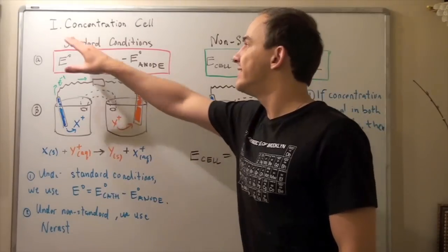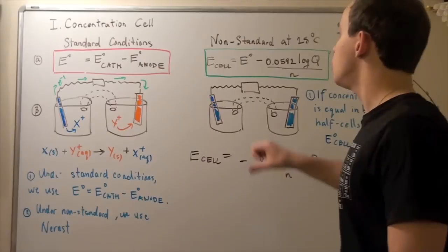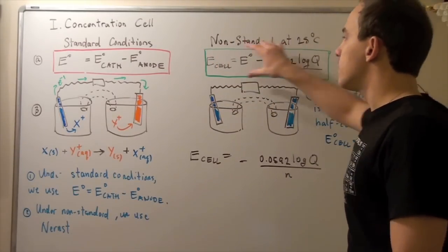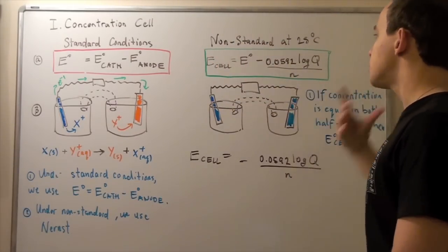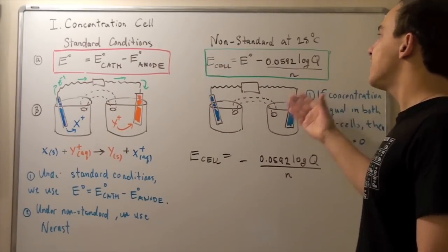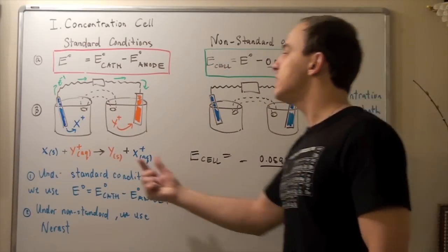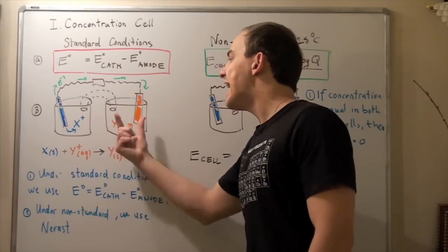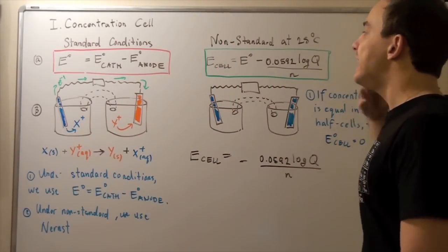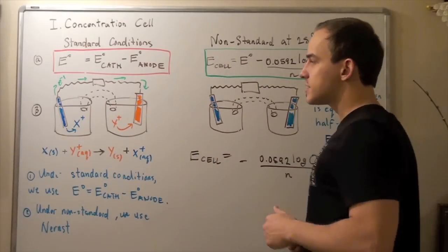What happens when our conditions are not standard? Well, then we have to use this formula, called the Nernst equation. What it basically tells us is that the concentration of our solutions in Beaker 1 and Beaker 2 will make a difference — they will influence the final cell voltage of our cell.